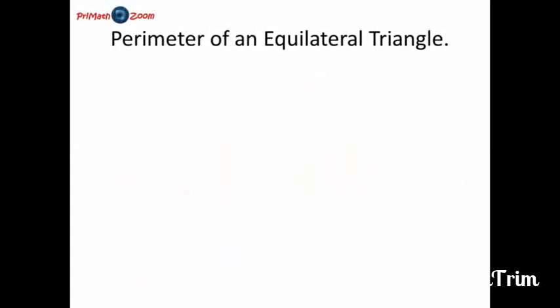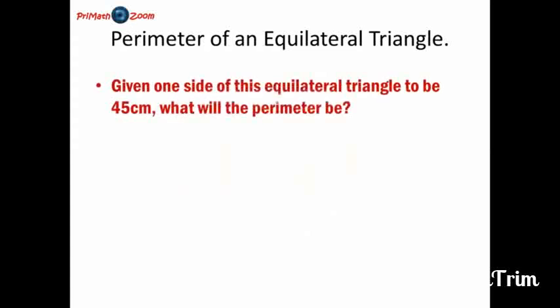Let us try finding the perimeter of an equilateral triangle. Given one side of this equilateral triangle to be 45 cm, what will the perimeter be? Now here is an equilateral triangle with 45 cm for one side. But what do we know of an equilateral triangle?